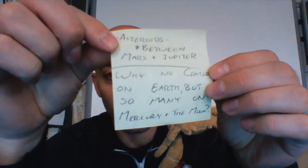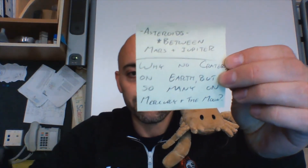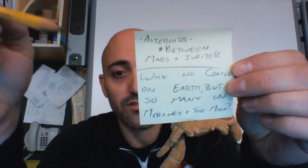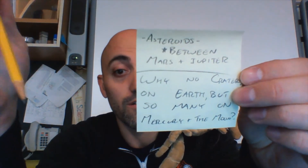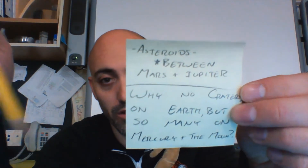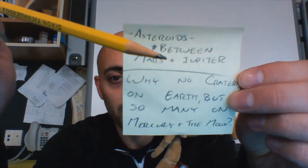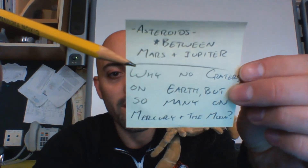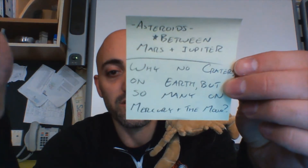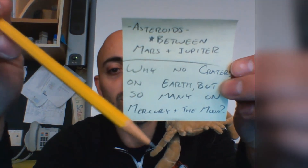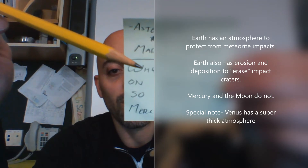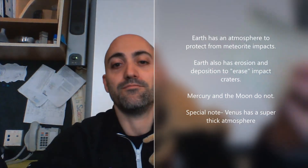Two important things that were forgotten: asteroids. There's an asteroid belt in between Mars and Jupiter — those are leftover rocky objects, some of which turned into the inner four planets like Earth. Then there's the question: why are there no craters or few craters found on Earth from meteorite impacts, when there are so many on Mercury and the Moon?